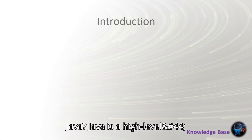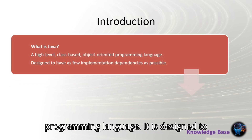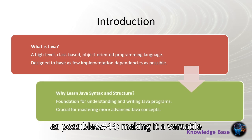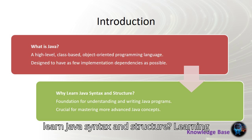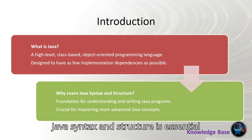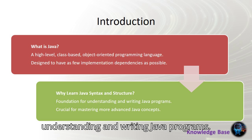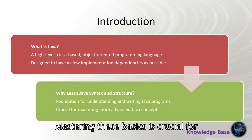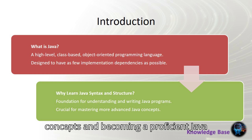What is Java? Java is a high-level, class-based, object-oriented programming language. It is designed to have as few implementation dependencies as possible, making it a versatile and powerful tool for developers. Why learn Java syntax and structure? Learning Java syntax and structure is essential because it forms the foundation for understanding and writing Java programs. Mastering these basics is crucial for progressing to more advanced Java concepts and becoming a proficient Java developer.